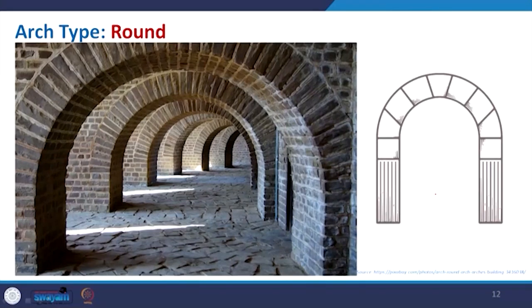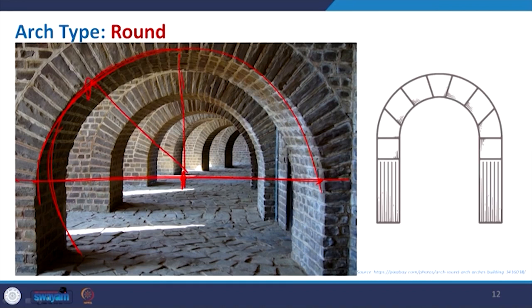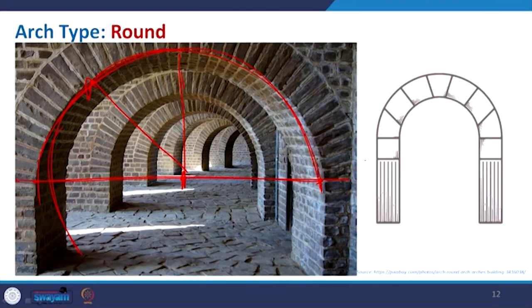Coming to the round arch: the form gives you a completeness of a circle — it is basically a semicircular shape where the center is fixed at the bisection of the horizontal line and the radius is rotated, giving a round form. As discussed in the example of India Gate, this is the kind of round arch formed there. Looking at the distribution — the number of bricks and the masonry layout — it has symmetry. The center is here, then this is your rise, and it gives the form of a round arch.